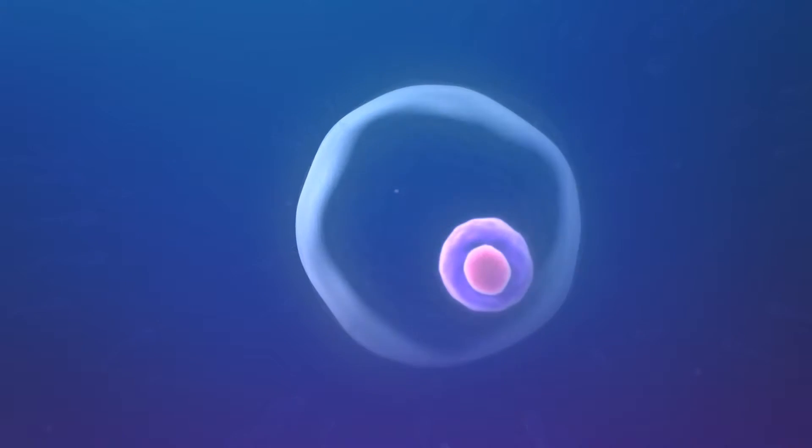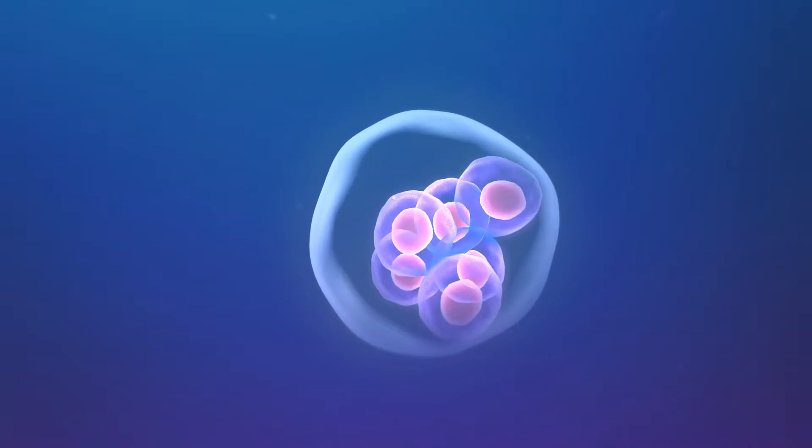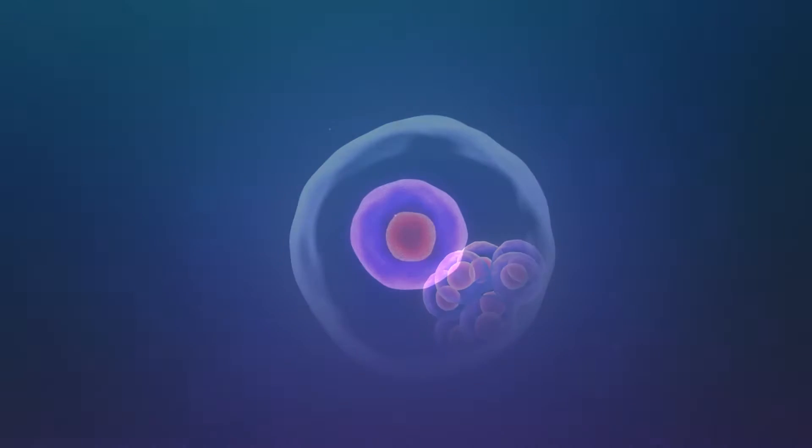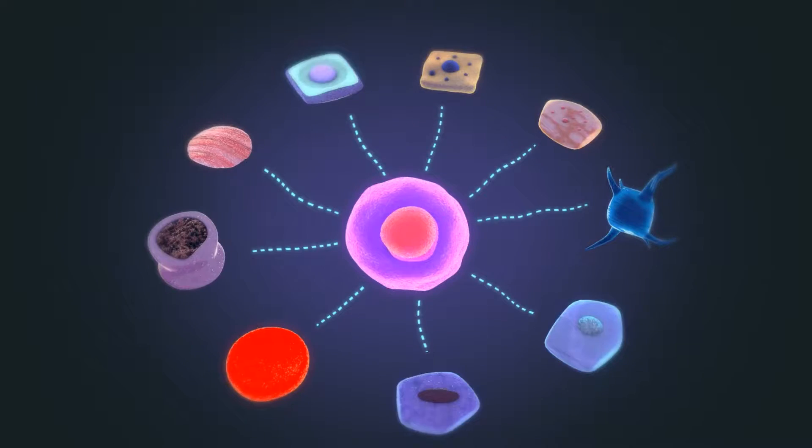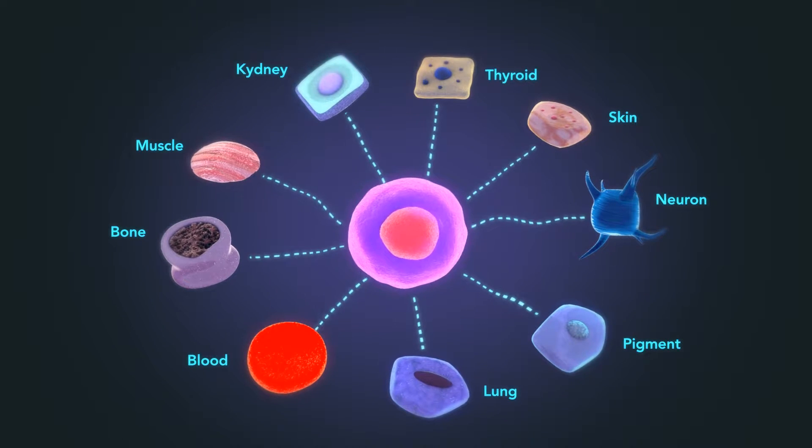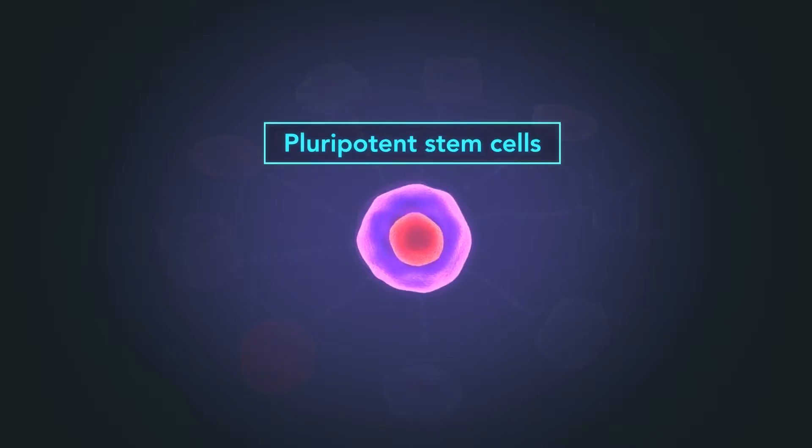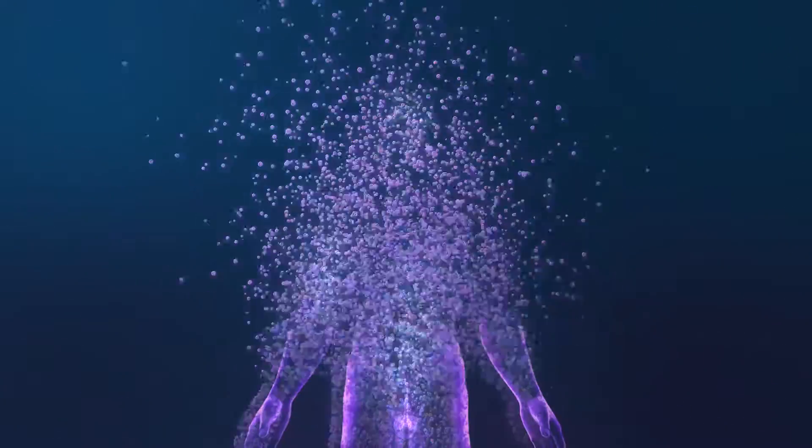In the early embryo, very soon after fertilization, there are stem cells that are able to differentiate or mature into any other tissue in our body. These cells are therefore called pluripotent stem cells, but very quickly thereafter they become specialized.